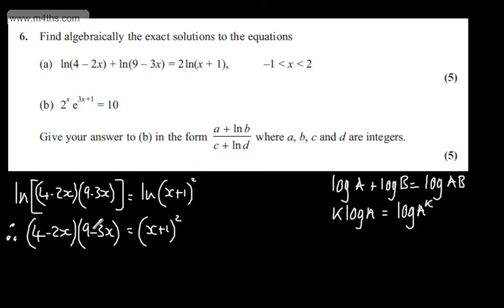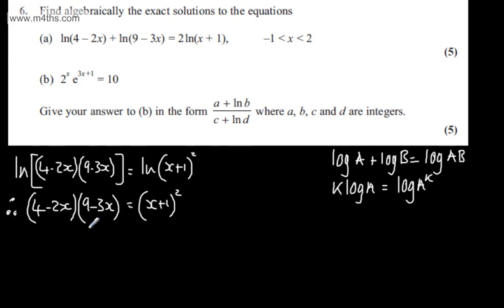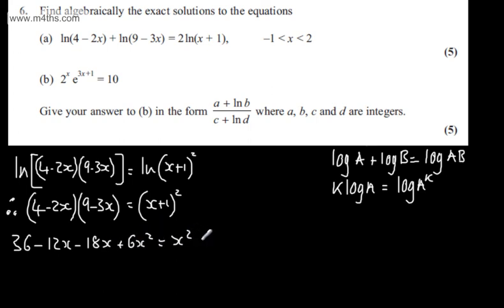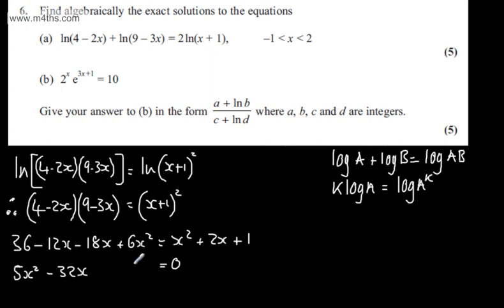We're going to expand the brackets on both sides and solve a quadratic in x. Expanding gives 36 minus 12x minus 18x plus 6x squared, equal to x squared plus 2x plus 1. Setting the right-hand side to 0 and collecting like terms on the left: 5x squared minus 32x plus 35 equals 0.